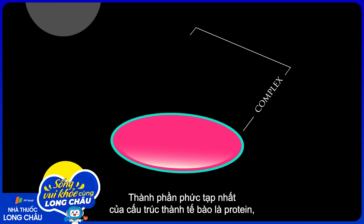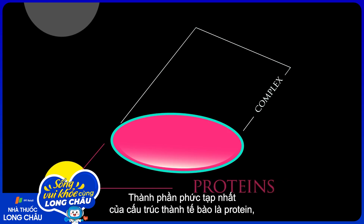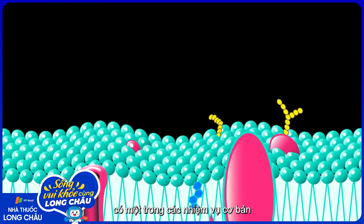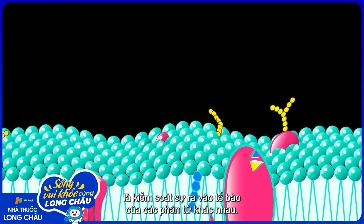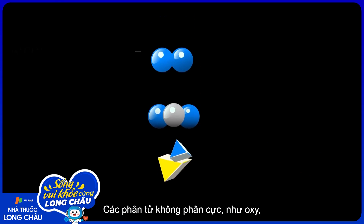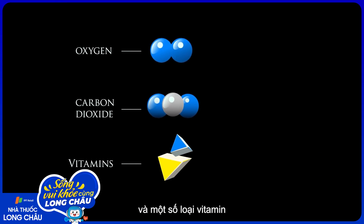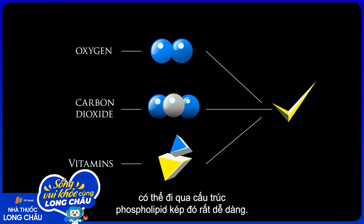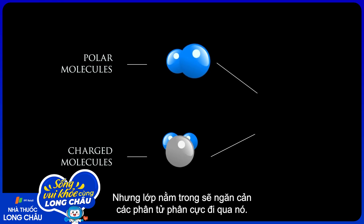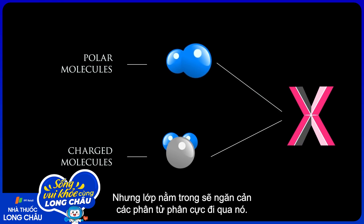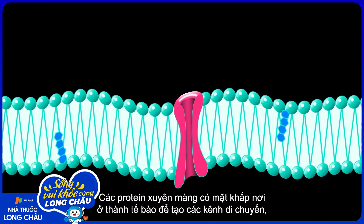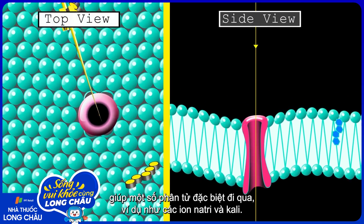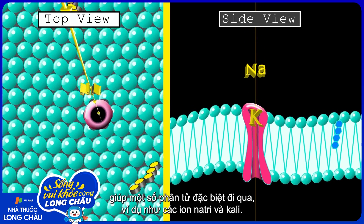The most complex components of the fluid mosaic are proteins. One of their key jobs is to make sure that the right molecules get in and out of the cell. Nonpolar molecules like oxygen, carbon dioxide, and certain vitamins can cross the phospholipid bilayer easily, but polar and charged molecules can't make it through the fatty inner layer. Transmembrane proteins stretch across the bilayer to create channels that allow specific molecules through, like sodium and potassium ions.